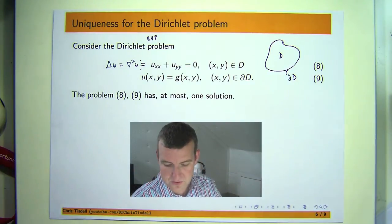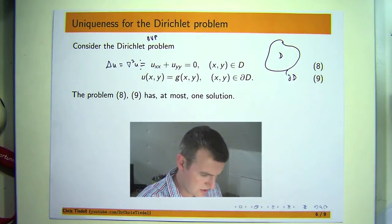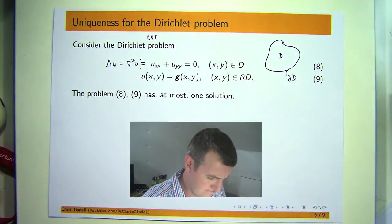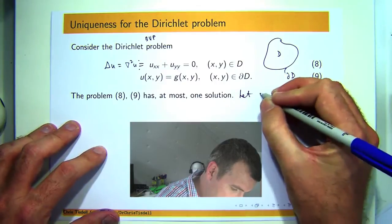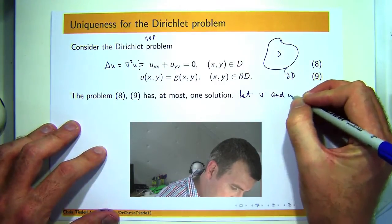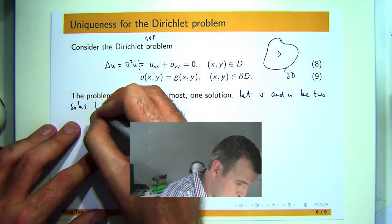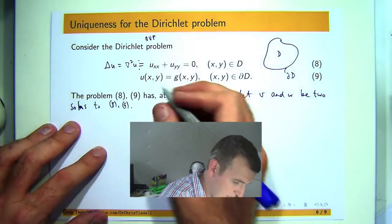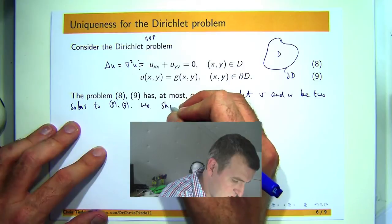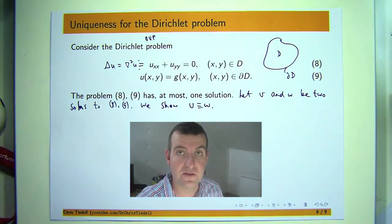So I'm going to prove this using Green's first identity. Now I'll show you that in a minute but let me just show you the main train of thought here. We're going to let V and W be two solutions to (8) and (9). What we're going to do is show that V is identically equal to W so those two solutions must be one and the same solution.